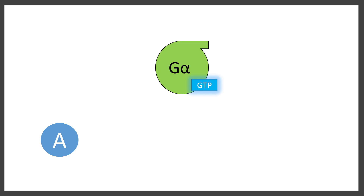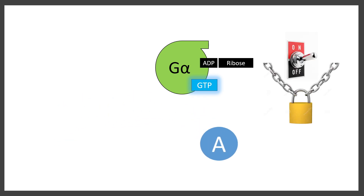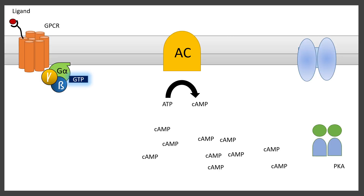A similar thing happens in the case of cholera toxin. Cholera toxin ADP-ribosylates the G protein, locking it into an active conformation. This leads to a huge increase in cyclic AMP in the cells, hyperactivation of protein kinase A, and opening of the CFTR channels.